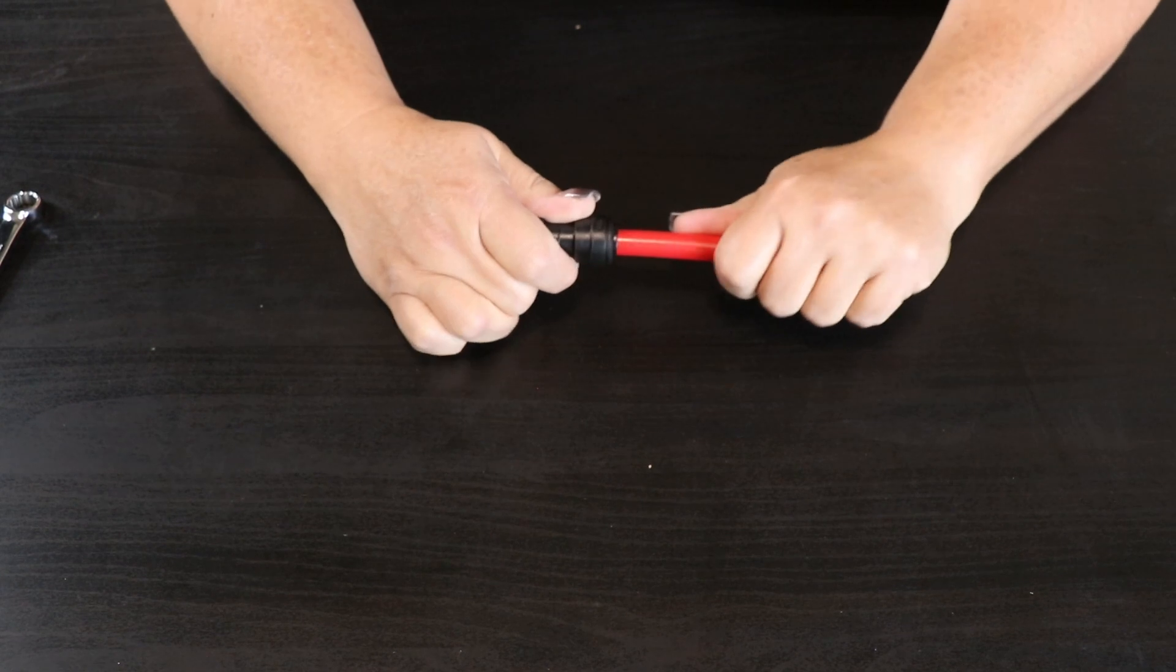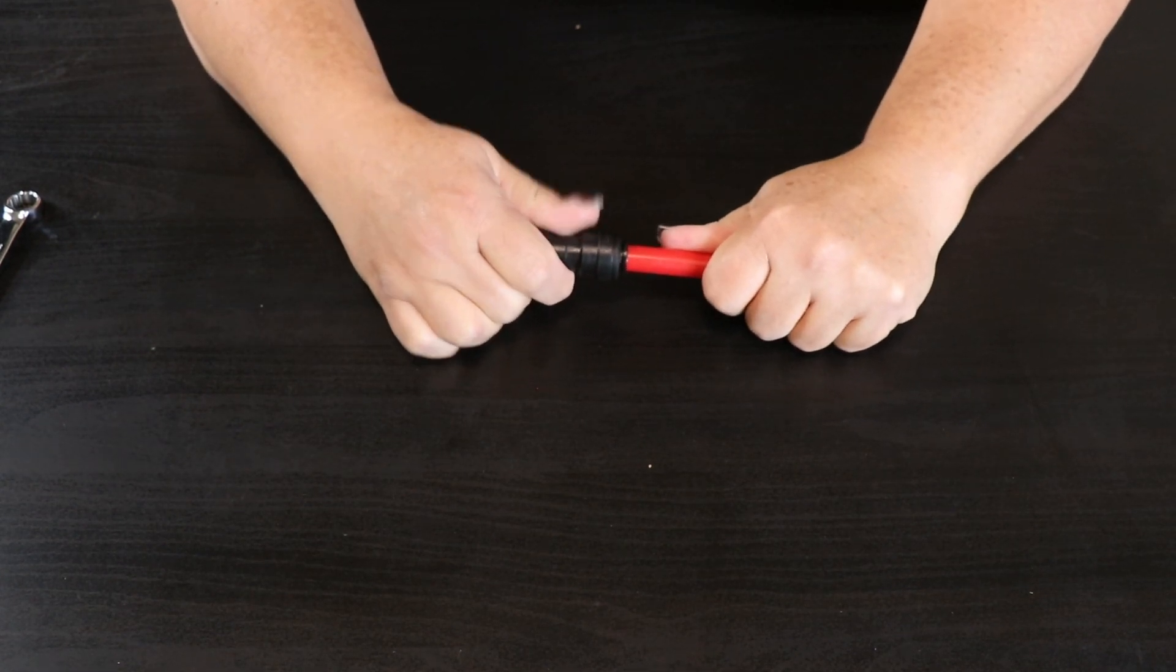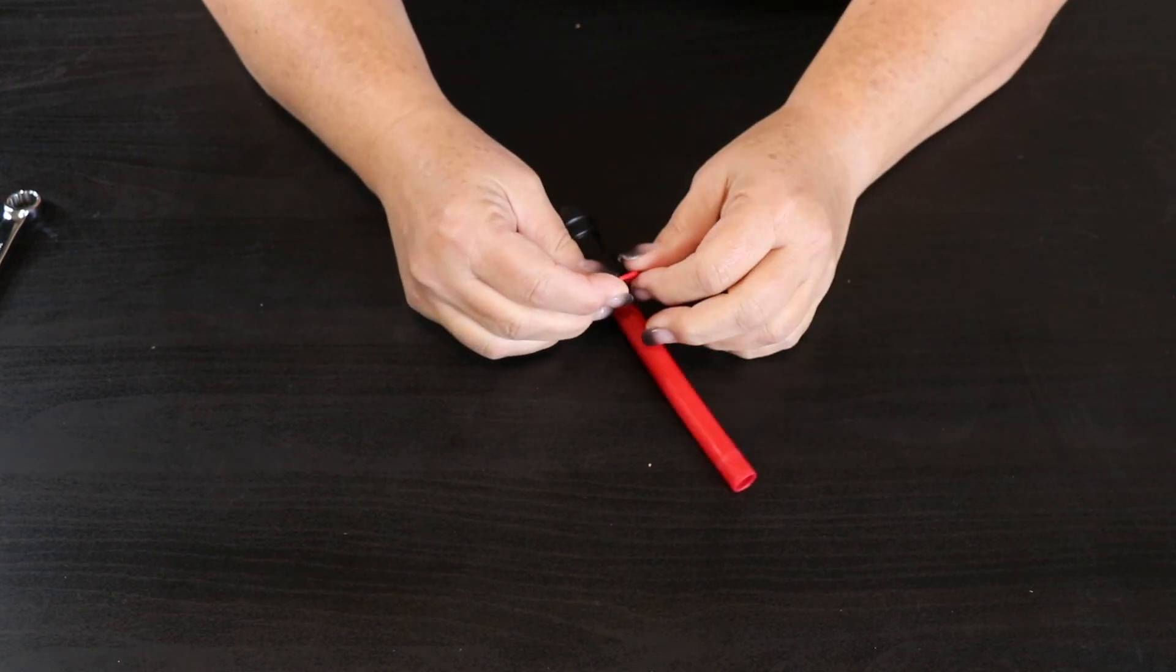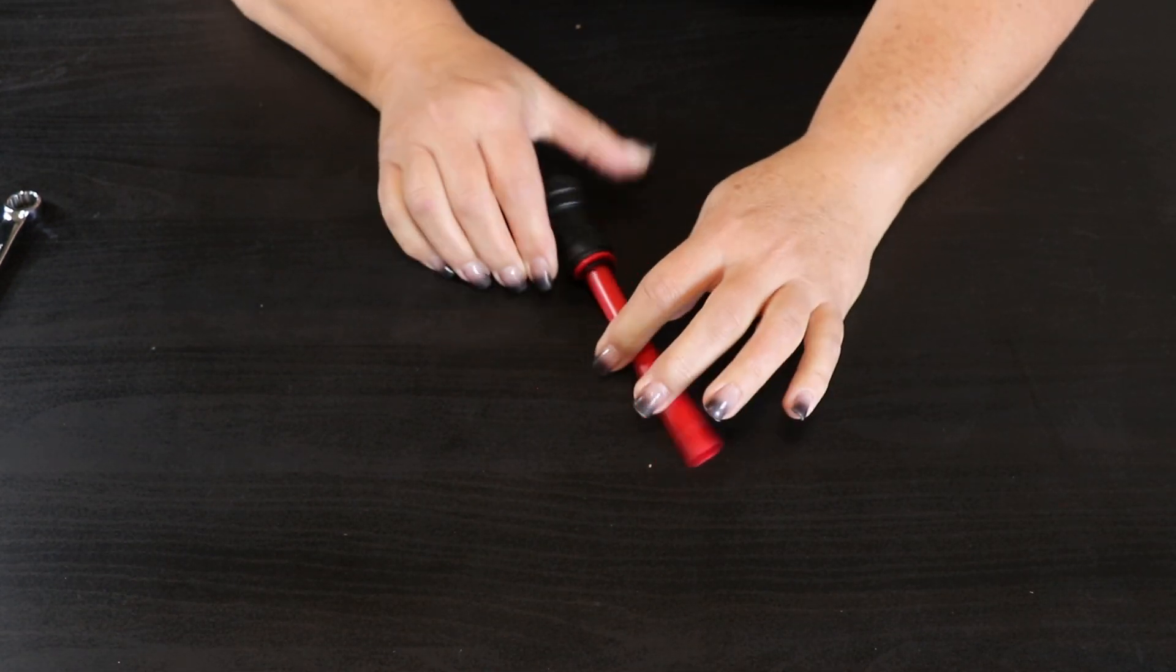Another great tip: when the tube is in there, always use the little red clip. That will ensure that the fitting won't come apart by itself.